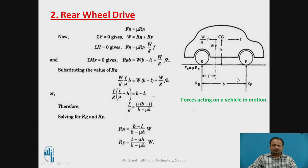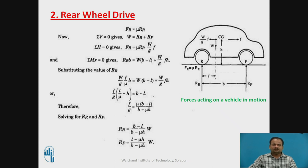Next is the rear wheel drive. As we are giving drive to the rear wheel, we need to consider FR equal to mu times RR. Taking vertical forces equal to zero gives W equal to RR plus RF. Taking horizontal forces equal to zero gives FR equal to mu times RR equal to W by G times A. Since we are giving drive to the rear, we take the moment about the front wheel, giving RR times B equal to W times (B minus L) plus W by G times F times H. Substituting the values of RR into the above equation gives this particular equation.